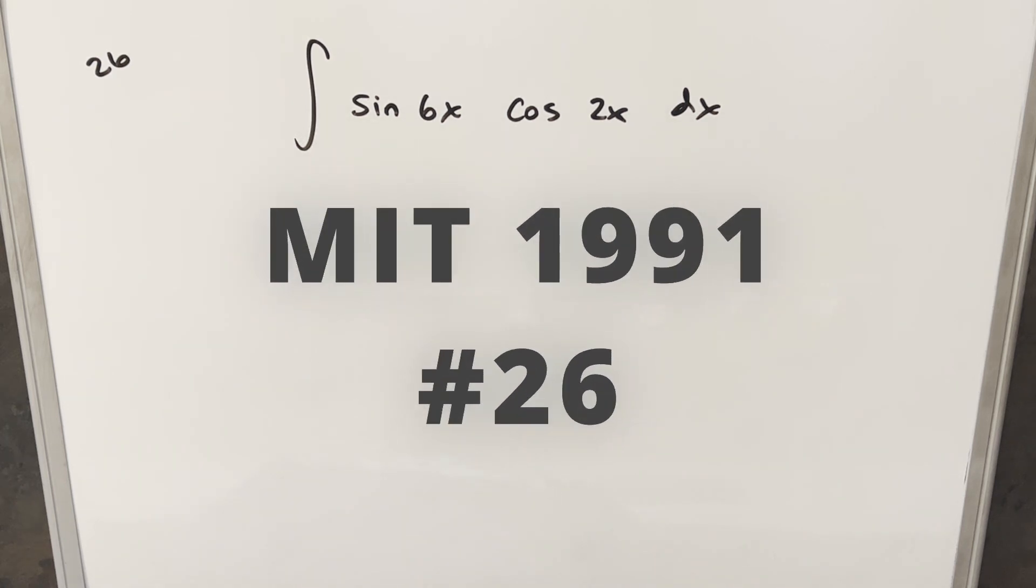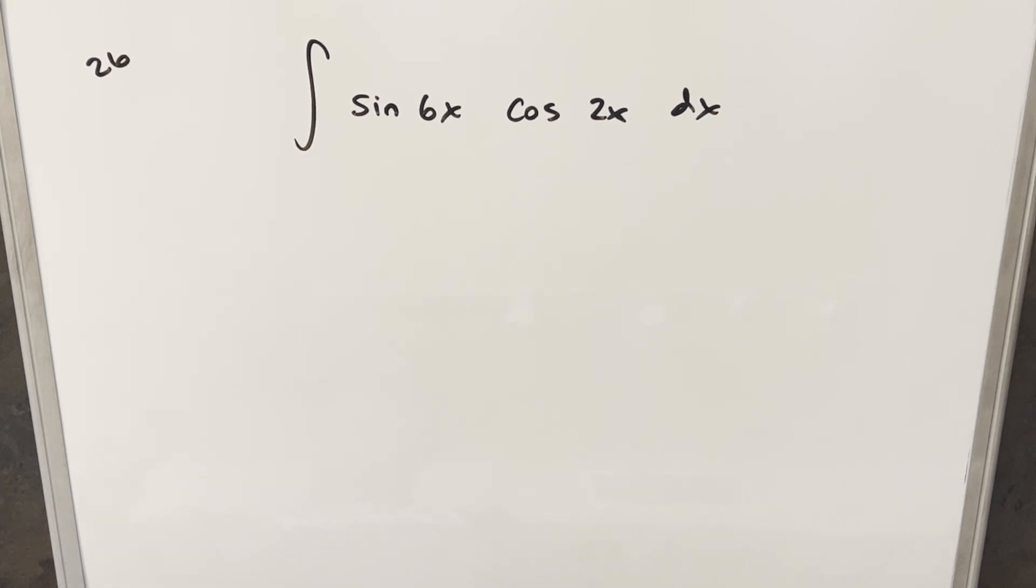Okay, we have here to take another integral from the MIT integration B 1991, number 26. We have the integral of sine 6x, cos 2x, dx. And yes, this is actually my third time doing this. I just keep coming across interesting methods. This one came up in the comments a few times that we can actually use integration by parts on this. So let's see how this goes.